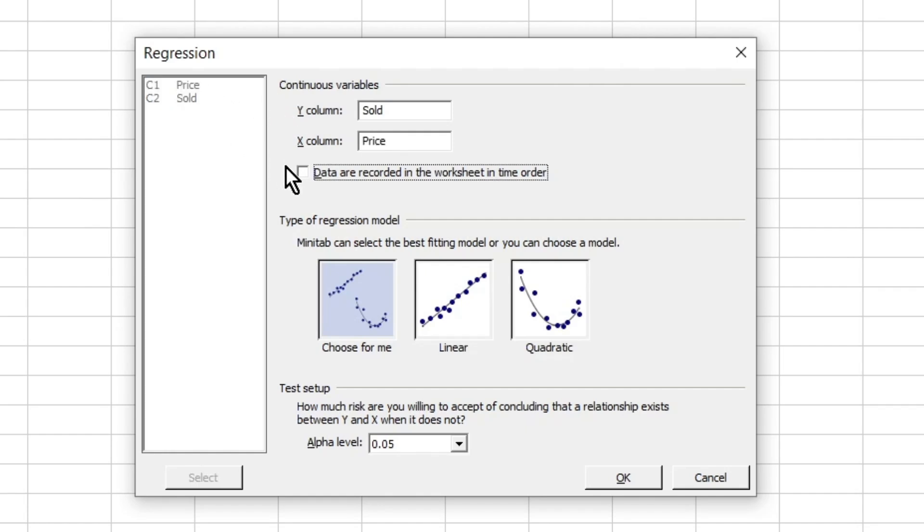We've been told that the data is recorded in time order so we can click the tick box there. Then we can choose the regression model between linear and quadratic or we can ask that Minitab chooses for us. Let's go with Minitab choosing for us. So then we just need to click OK.